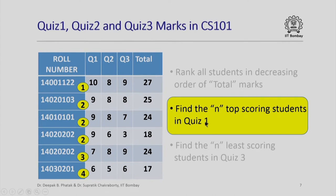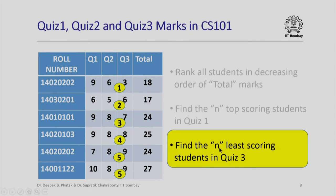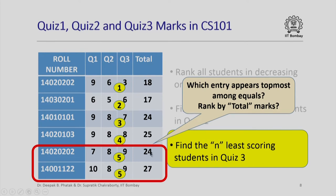If I am trying to find the top n scoring students in quiz 1, there are three students tied at the second position with the same quiz 1 marks. Among them, one could rank by decreasing order of total marks. Similarly, to find the n least scoring students in quiz 3, unlike the previous examples I am interested in the least scoring students, so I should order by putting the lowest quiz 3 score first, then the next higher score. Two students tied in quiz 3 could be ordered by total marks.